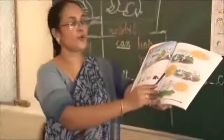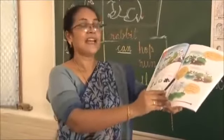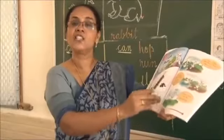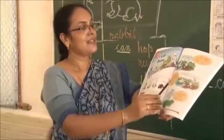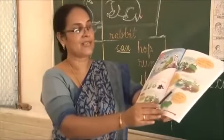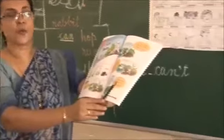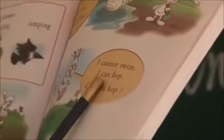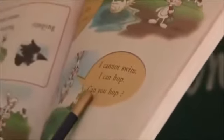The swan told her name, that she is Dolly, and she told that she can swim. Now the swan asked the rabbit, Bunny, can he swim? The rabbit replied: I cannot swim. I can hop. Can you hop?